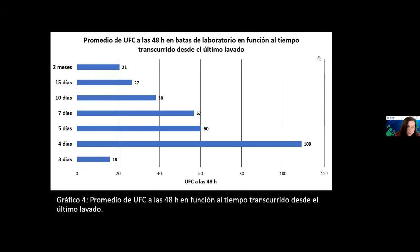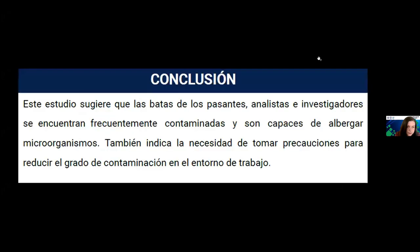En la gráfica 4 podemos observar el promedio de UFC a las cuarenta y ocho horas en bata de laboratorio en función al tiempo transcurrido del último lavado; el mayor promedio de UFC, de ciento nueve, fue para el periodo de cuatro días. En base a esto, este estudio sugiere que las batas de los pasantes, analistas e investigadores se encuentran frecuentemente contaminadas y son capaces de albergar microorganismos. También indica la necesidad de tomar precauciones para reducir el grado de contaminación en el entorno de trabajo.